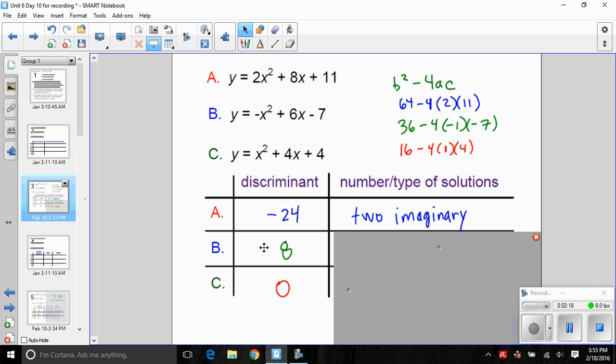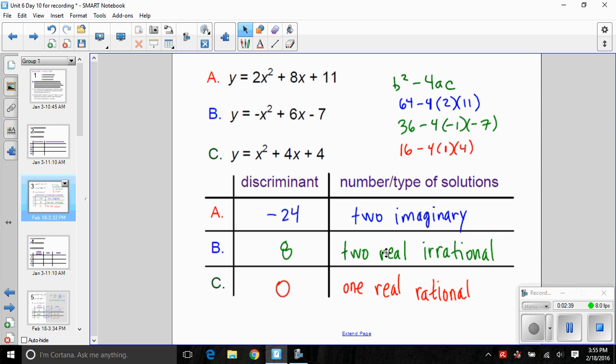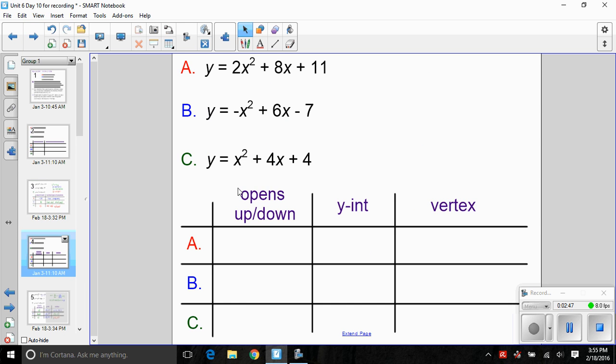Equation B with the discriminant of 8, that's an indication that we have two real solutions. Because 8 is not a perfect square, we know that that radical in the quadratic formula is not going to reduce entirely, so it's two real irrational solutions. Lastly, equation C with a discriminant value of zero indicates that special case where my vertex was right on the x-axis. There is a single real rational solution.